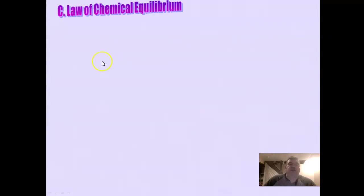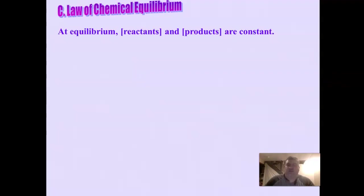Let's take a look at the law of chemical equilibrium. Here's what you already know about equilibrium: once a system is at equilibrium, the amount of reactants and the amount of products doesn't actually change. Concentration of reactants and concentration of products remains constant. So if you come back an hour later, you still have the same amount of reactants and products.